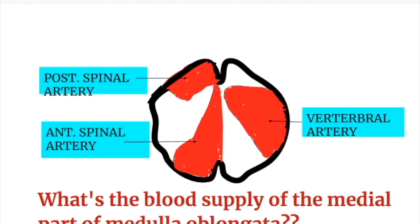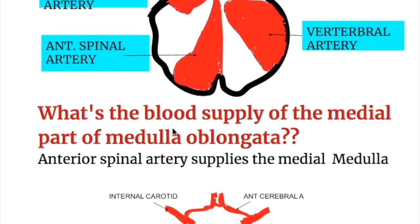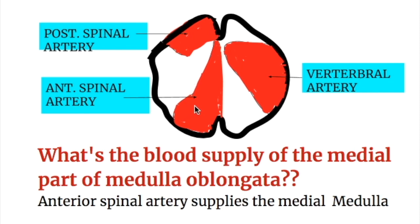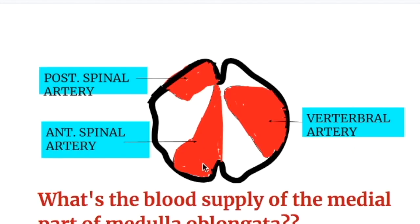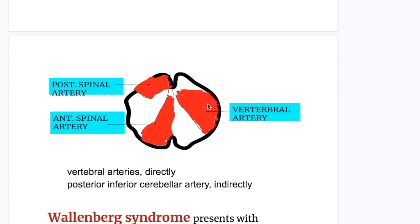What is the blood supply of the medial part of the medulla? The anterior spinal artery supplies the medial part of the medulla oblongata. The vertebral arteries supply the lateral portion, the posterior spinal artery supplies posteriorly, and the anterior spinal artery supplies the medial part of the medulla.